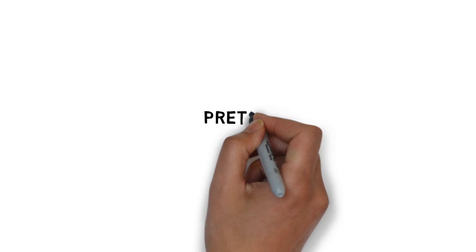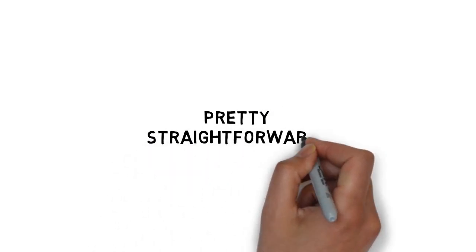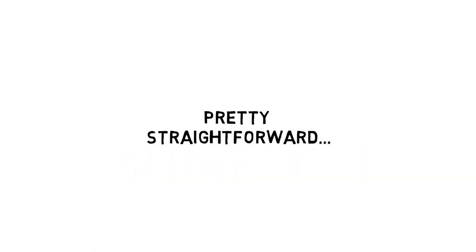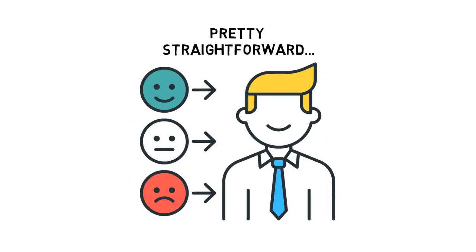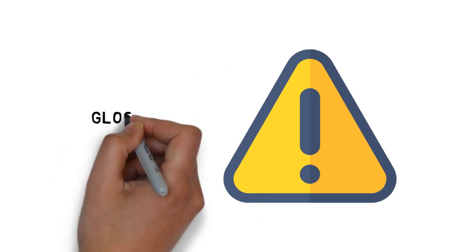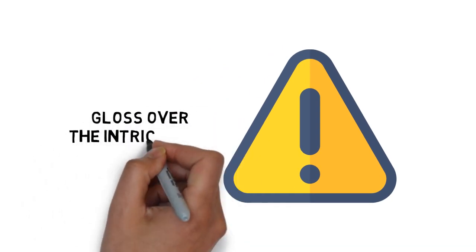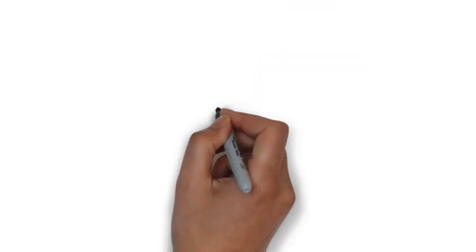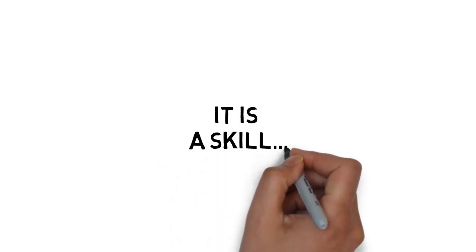Put in these terms, emotional intelligence seems pretty straightforward. However, it has very important components that we need to seriously examine instead of just automatically assuming. This is the big danger of emotional intelligence — it's too easy to gloss over the intricacies and fine details of this skill. That's precisely what emotional intelligence is: it is a skill.